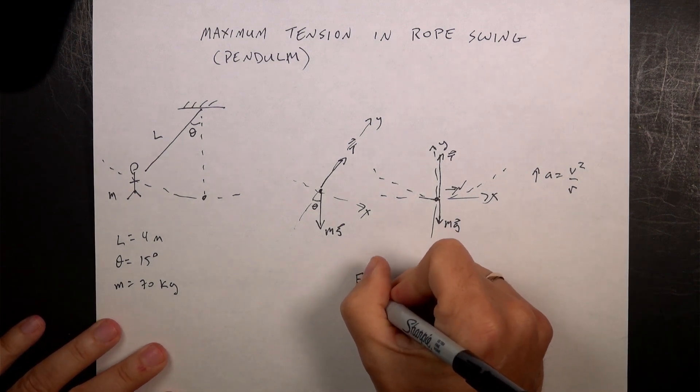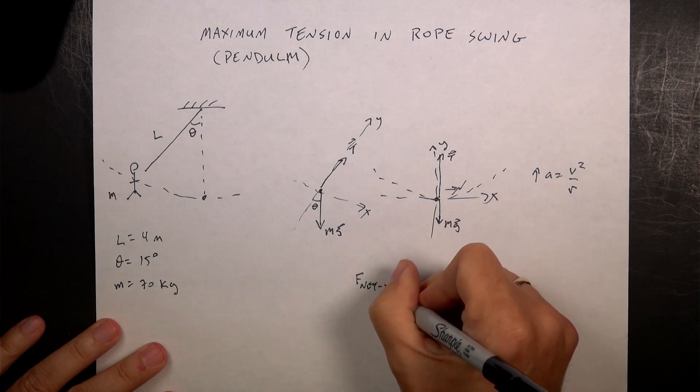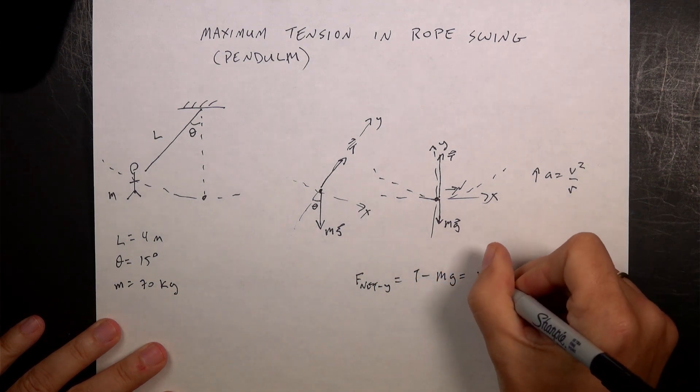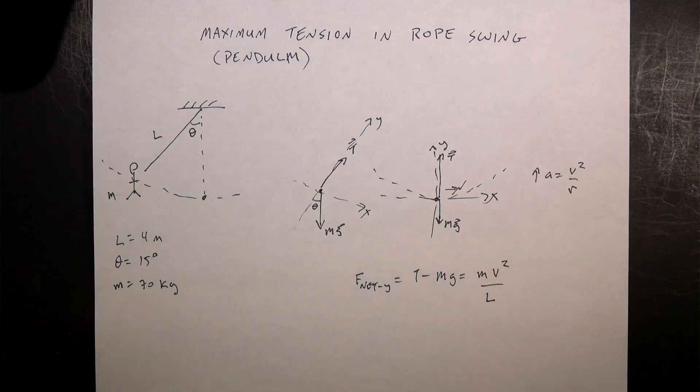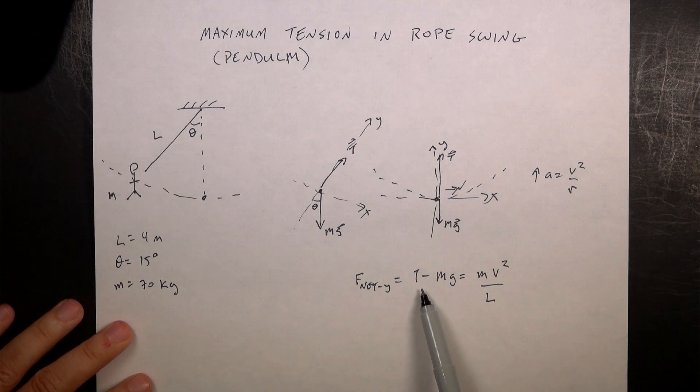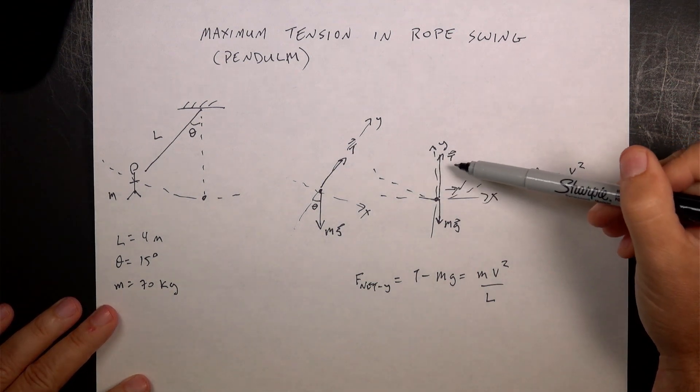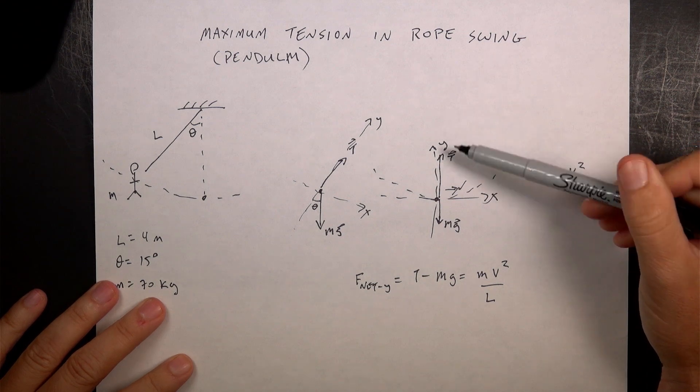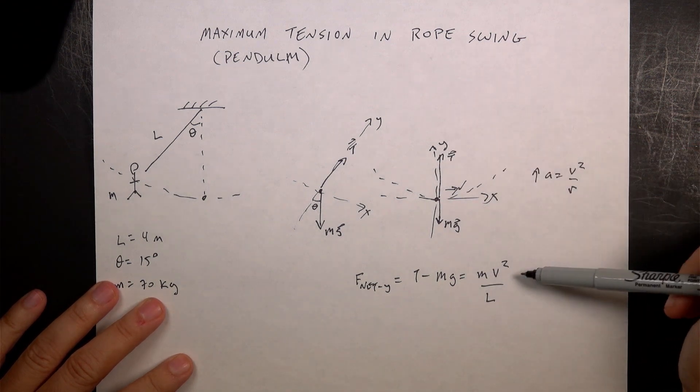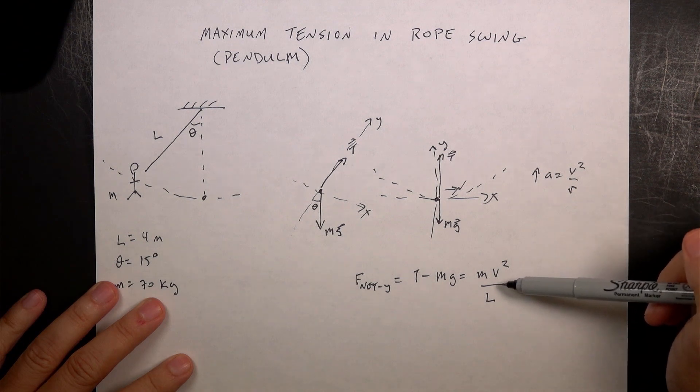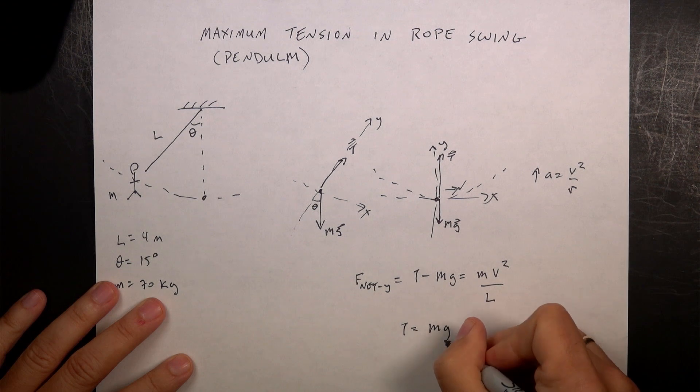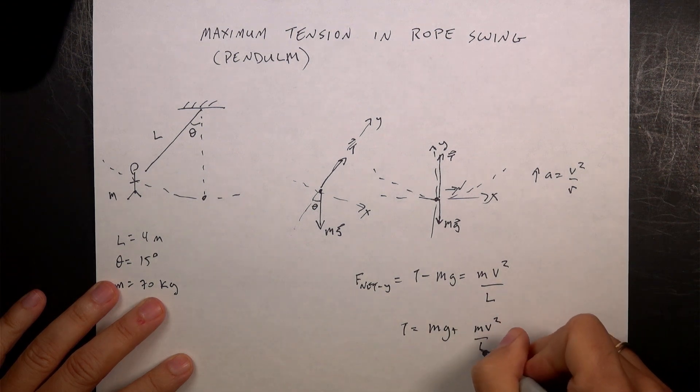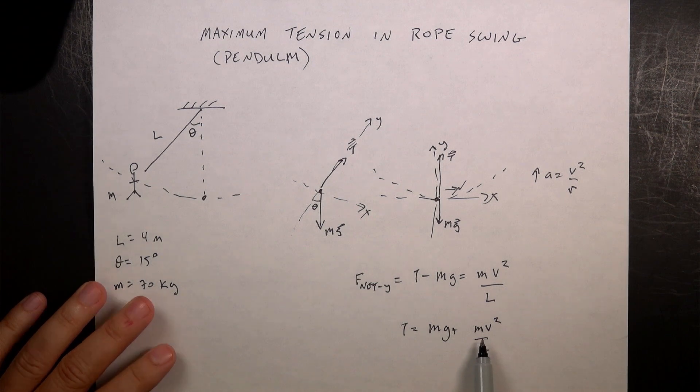So I could go ahead and say this. F net y is t minus mg equals m v squared over l. I'm going to go ahead and put l as the radius of the circle. So in this case, the y component of the tension is positive t. The y component of the gravitational force is negative mg. And the acceleration is in the positive direction. Instead of r, I put in l. And so I could solve this for t. And I get t equals mg plus m v squared over l. And you can see that that's the weight, and then we have this extra term in there. But you can see the problem hopefully, and that is what is the velocity? How fast is the person going?